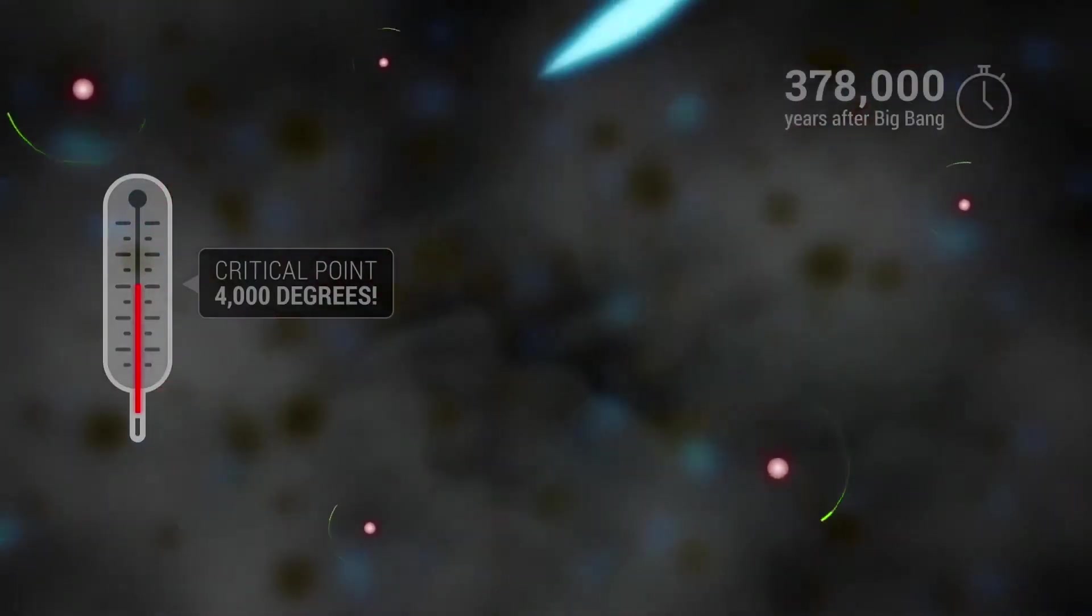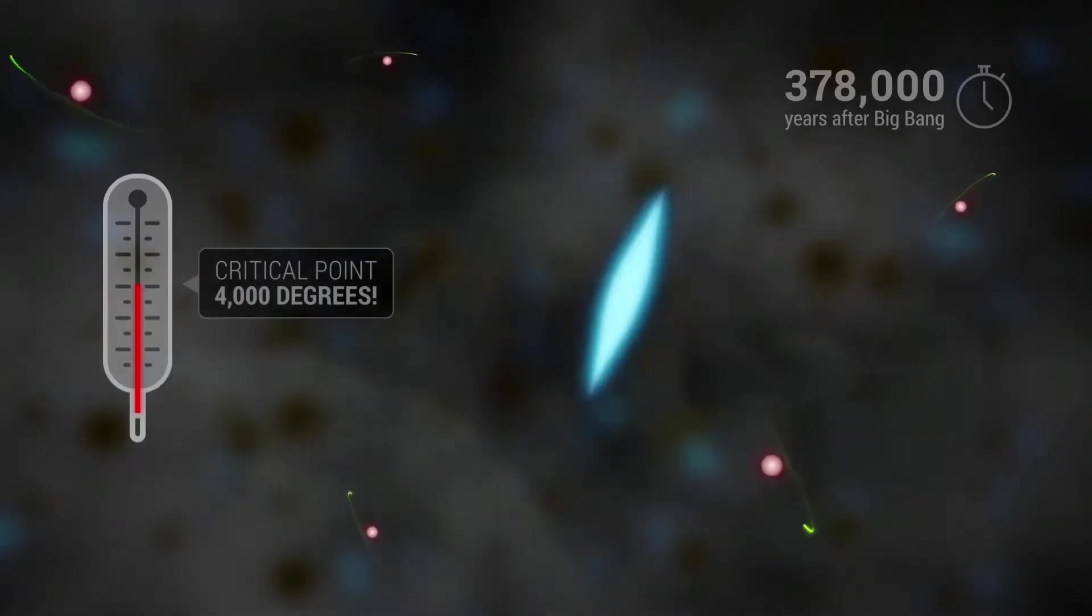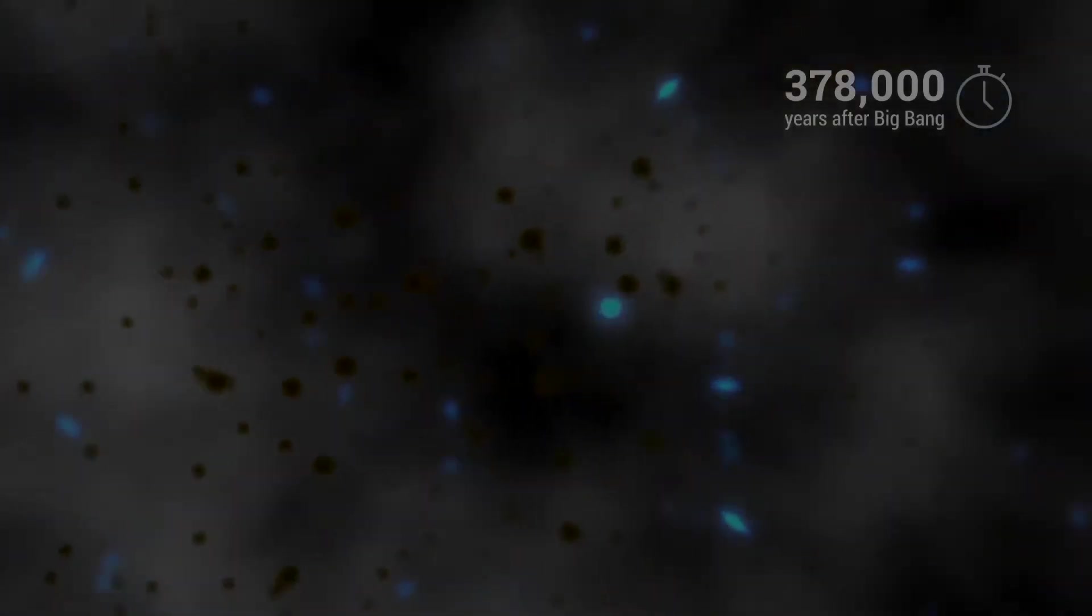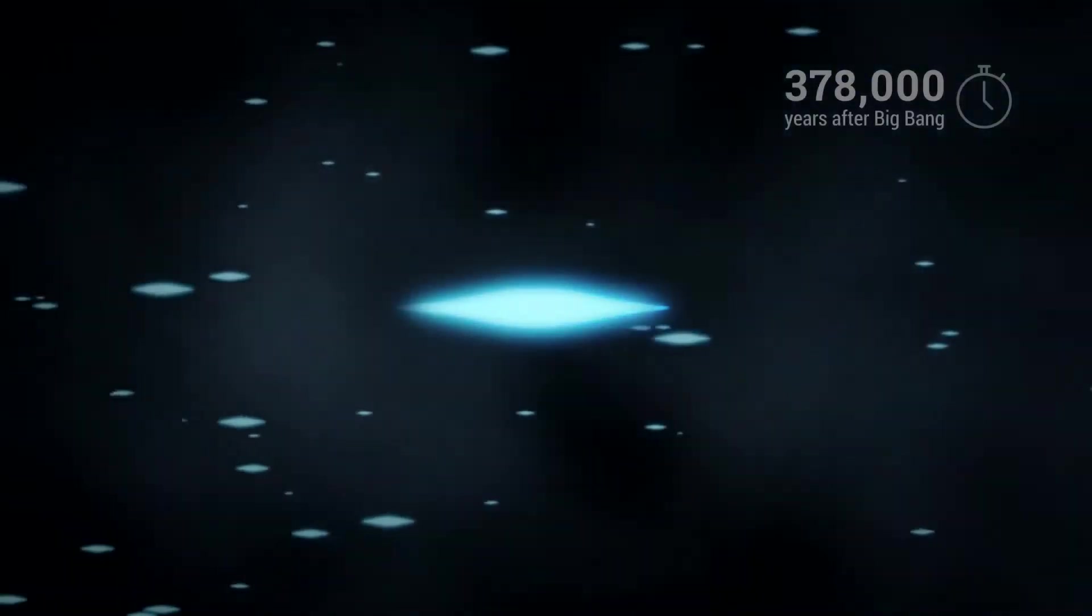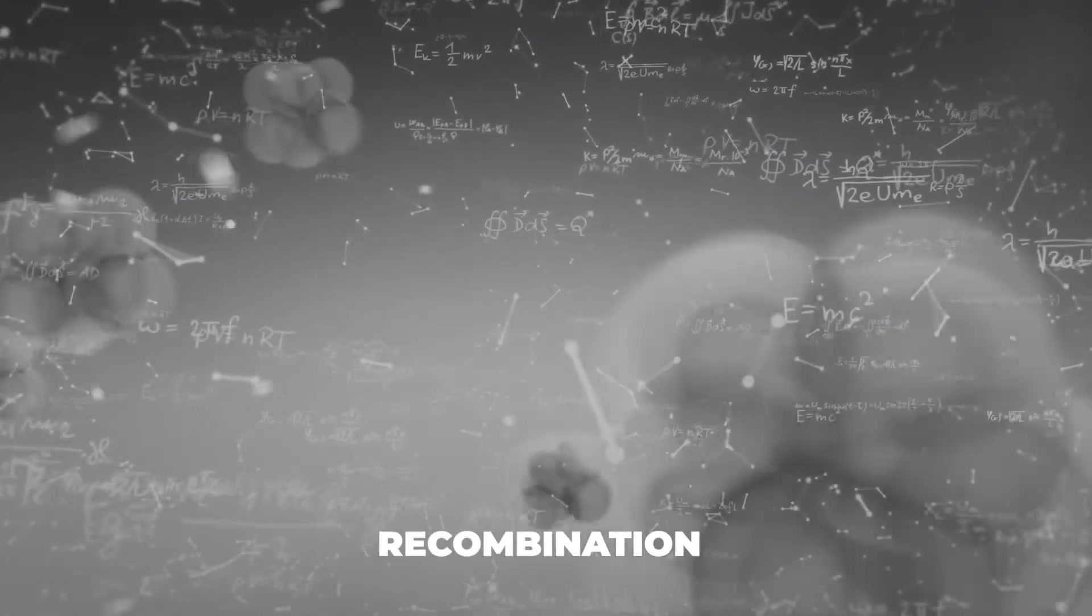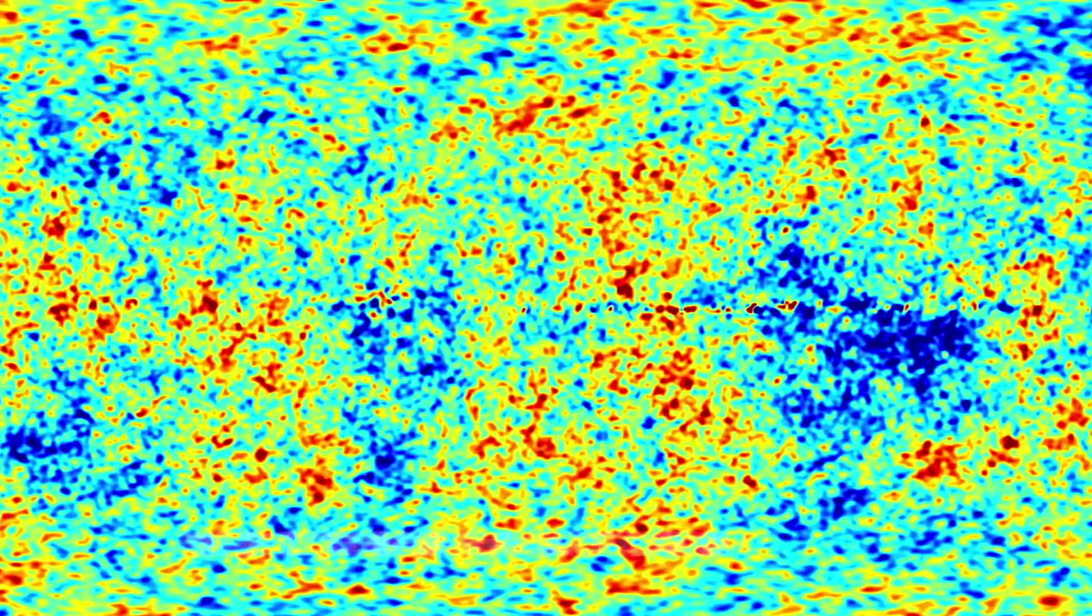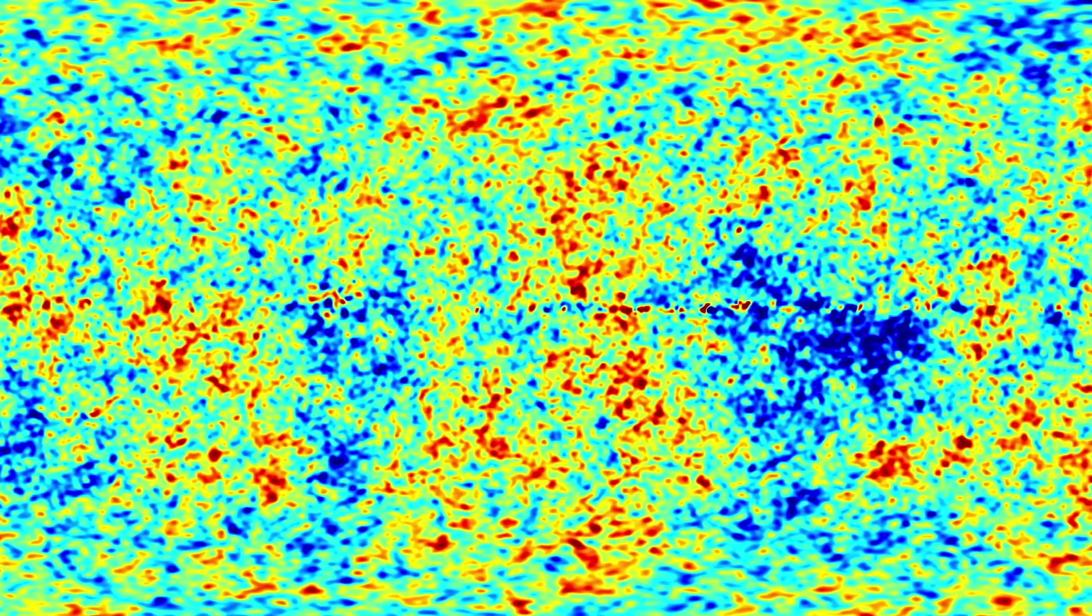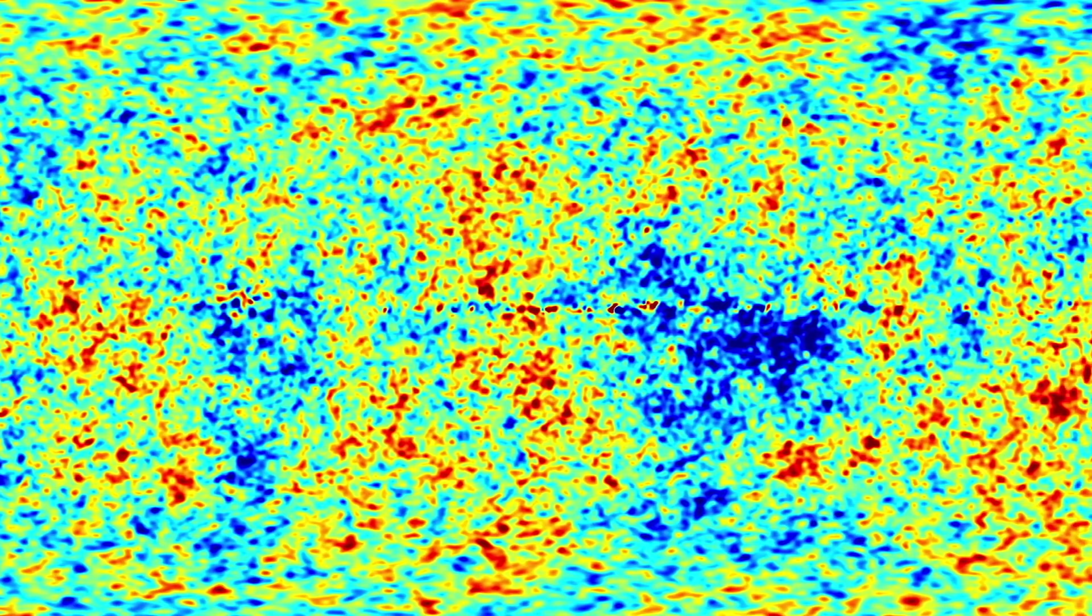Once the universe was around 240 to 300,000 years old, it turned from opaque to transparent, and the last free electrons were bound to protons, a phase that is referred to as recombination. This time also marks the point that the cosmic microwave background allows us to see what the cosmos was like at this point in history.